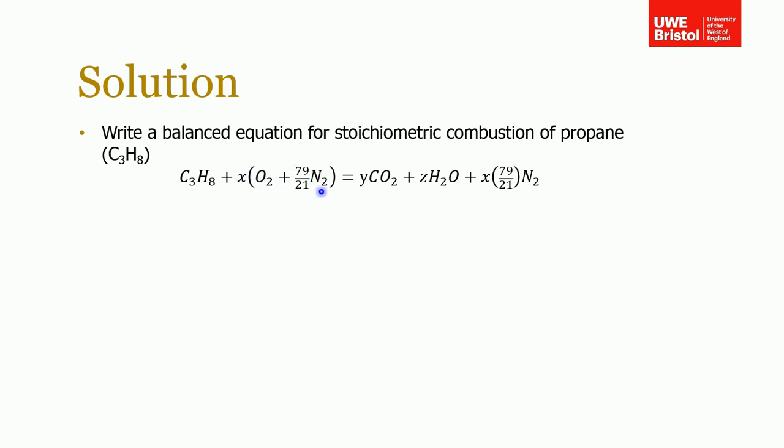I've written it this way because oxygen is 21% of air and nitrogen is 79%. For every one unit of oxygen, we're bringing along 79/21, or 3.76 units of nitrogen. Go back and look at the lecture if you can't remember how I got this.